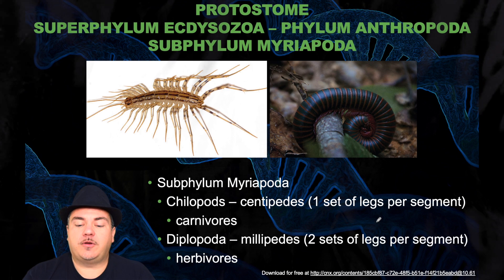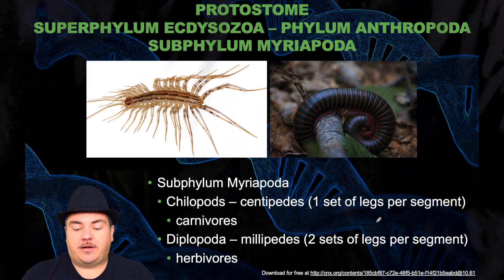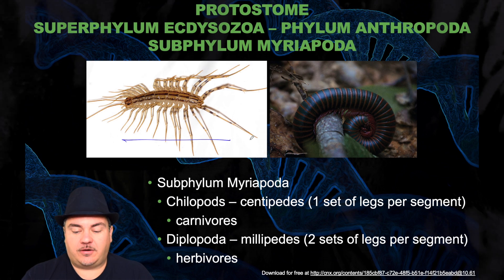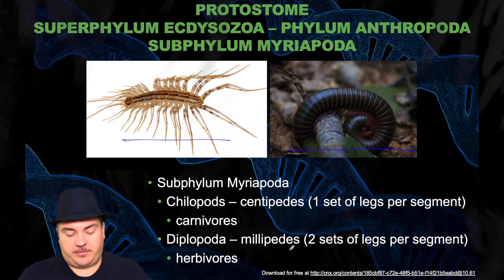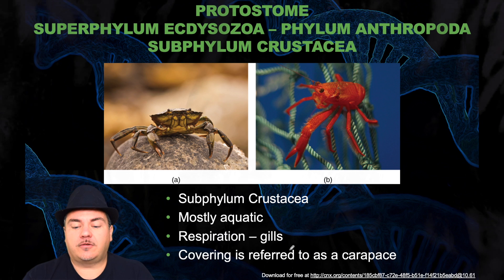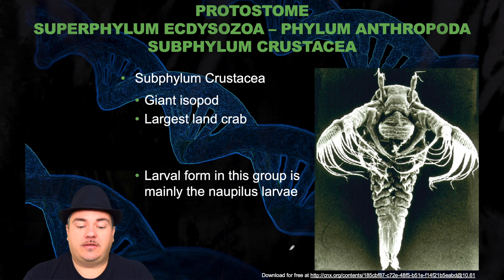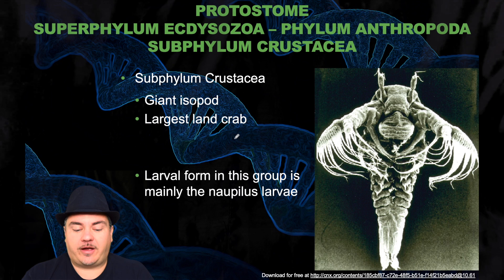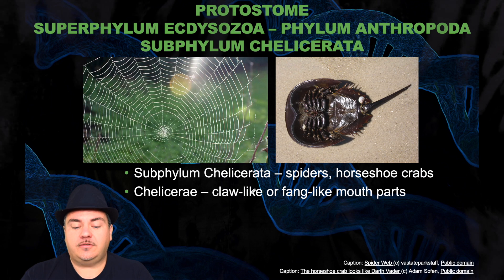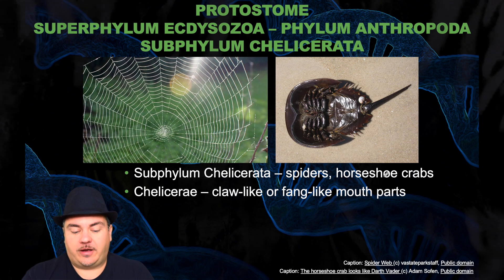Next is the phylum Myriapoda, with two types: chilopods and diplopods. Chilopods are centipedes — they have one set of legs per segment and are carnivores. Diplopods are millipedes — they have two sets of legs per segment and are herbivores. The subphylum Crustacea are mostly aquatic; respiration is through gills and their covering is referred to as a carapace — examples include the giant isopod and land crabs. The subphylum Chelicerata includes spiders and horseshoe crabs, and they have claw-like or fang-like mouthparts.